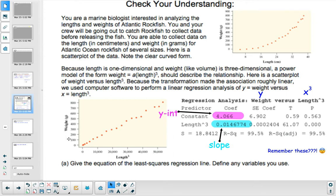So you cube the length and compare it to the weight. Because the transformation made the association roughly linear, we use computer software to perform a linear regression analysis of y equals weight versus x equals length to the third power.